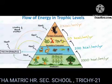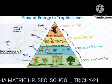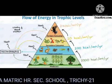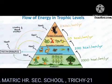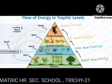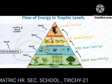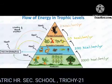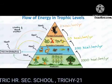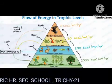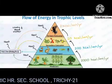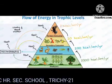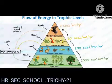A rat eats grains, and snake eats rat. Snake is prey for peacock, and peacocks are prey for tigers and leopards. In all food chains there is a top-level predator that has no natural predators. In an aquatic ecosystem, there are no natural predators for alligators. In a forest, there are no natural predators for tigers.